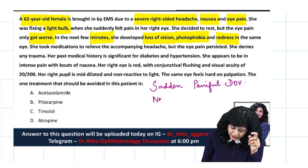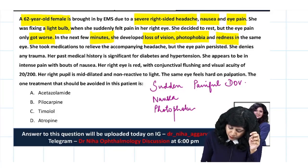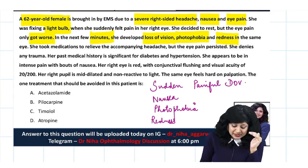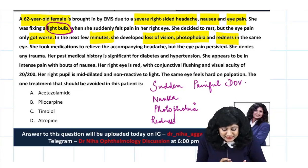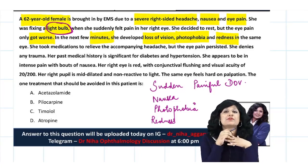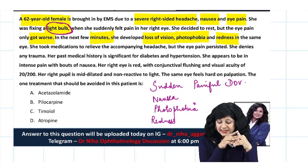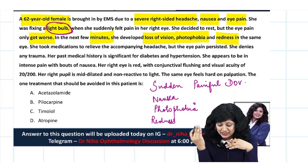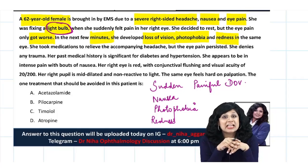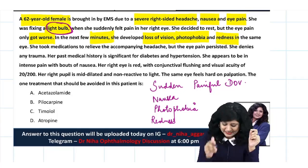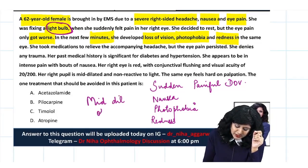Along with sudden painful diminution of vision, we have nausea, photophobia, and redness — all these things precipitated by a bright light. When this patient was fixing a light bulb, she was getting right-sided headache, nausea, pain, loss of vision, photophobia. If she was fixing a bulb, most probably the room was dark, and dark conditions can lead to mid-dilation of the pupil.